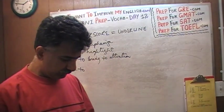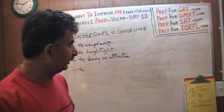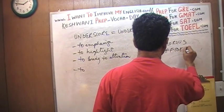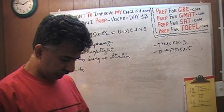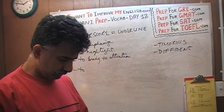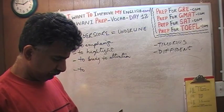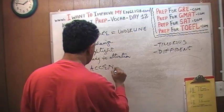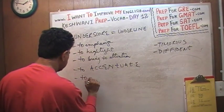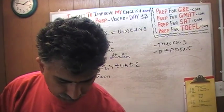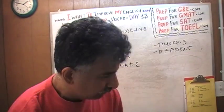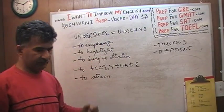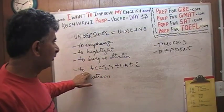There's another word that comes to mind: 'accentuate.' I'll put it on the side because I'll have to cover it in the future. To underscore a point is to stress that point, to accentuate it, to highlight it, to bring it to attention, to emphasize it — which is the same as to underline something.